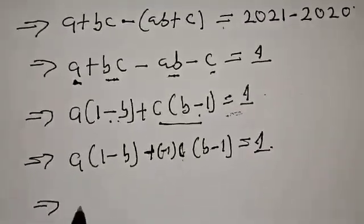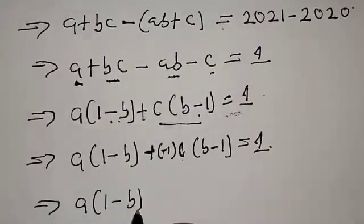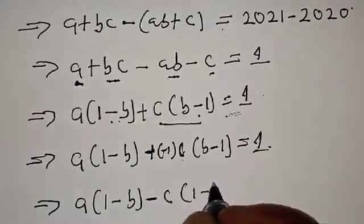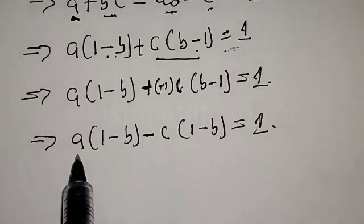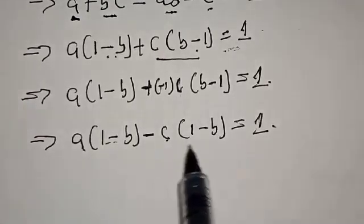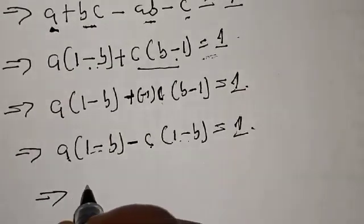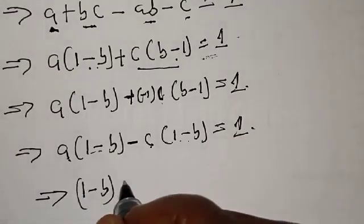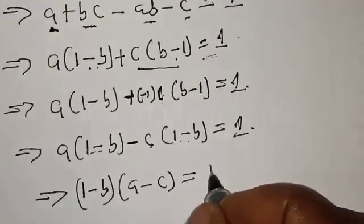This implies that we have A into 1 minus B, and then we factor C from the remaining terms to get C into B minus 1. To make B minus 1 match 1 minus B, we multiply by minus 1. This gives us 1 minus B into A minus C equal to 1.